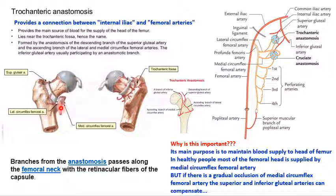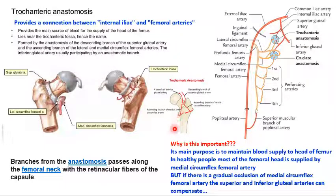If there is any occlusion of the medial circumflex femoral artery, the superior and inferior gluteal arteries can compensate the supply to the head of the femur via the trochanteric anastomosis. To summarize, the trochanteric anastomosis provides the connection between the internal iliac and external iliac arteries, and is formed by the ascending branches of the medial and lateral circumflex femoral arteries, a descending branch of the superior gluteal artery, and a branch from the inferior gluteal artery.